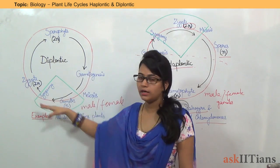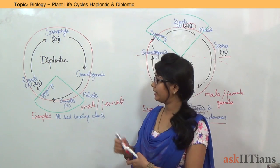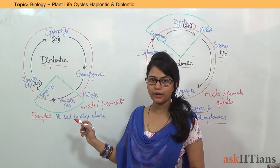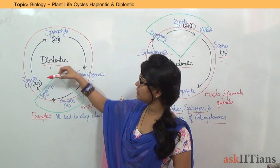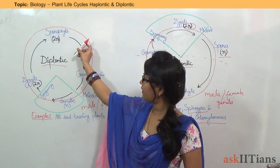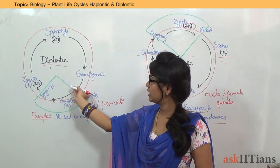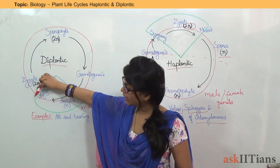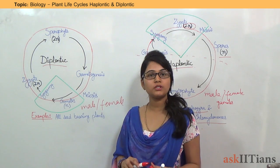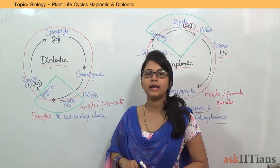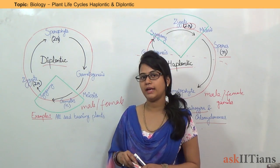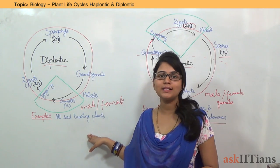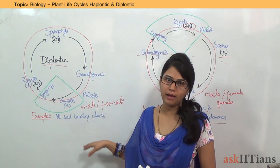So this is called the diplontic life cycle of plants. Why is it called diplontic? Because the major dominant photosynthetic phase is diploid in nature. Examples are all seed-bearing plants.